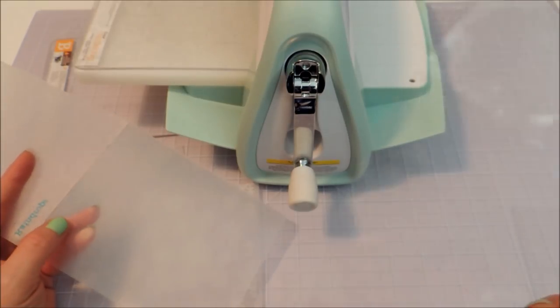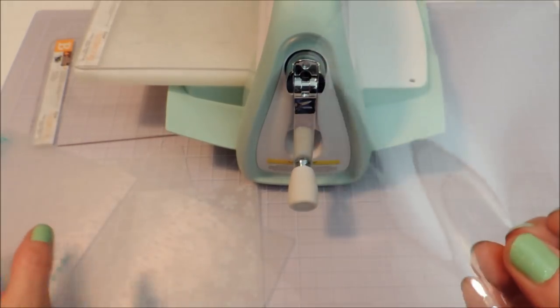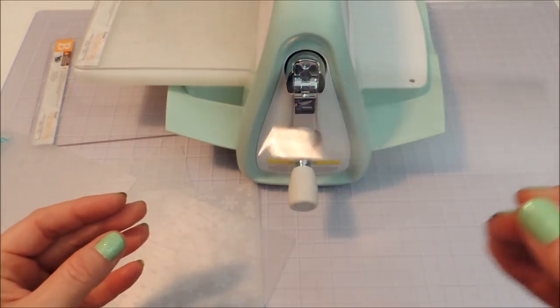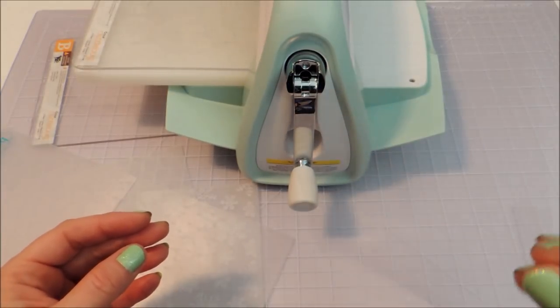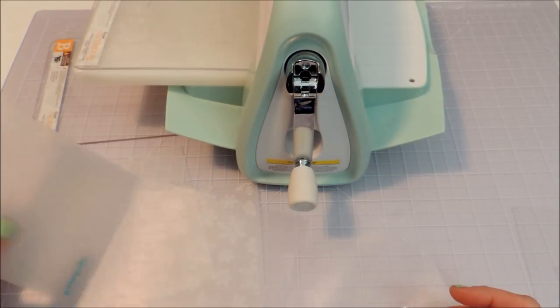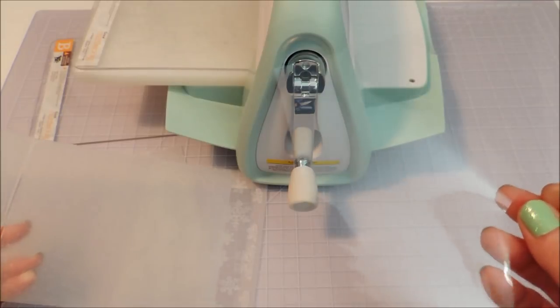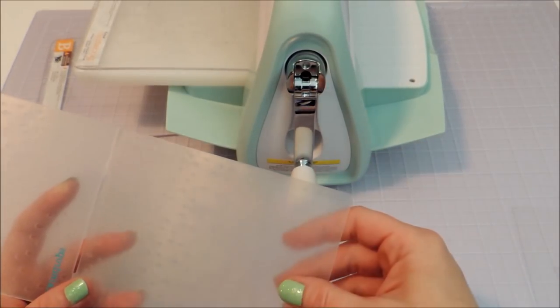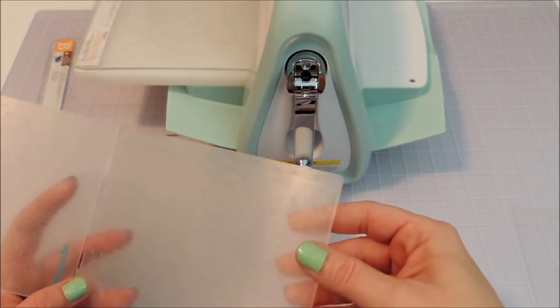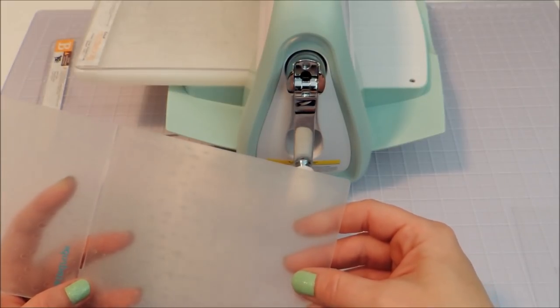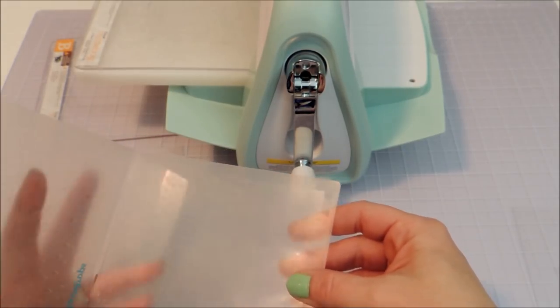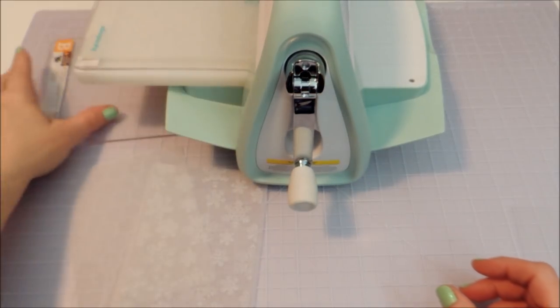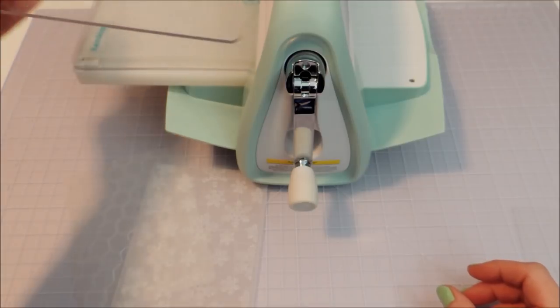I'm going to be doing this with two different thicknesses of acetate to show you guys. This is a thin one that just comes in packs by the sheet. You can see the difference in what kind of embossing texture you get with the different thicknesses. So that's the thin one and we're going to send that through.